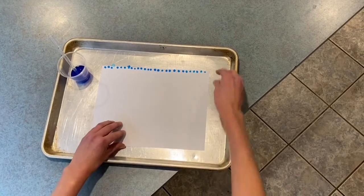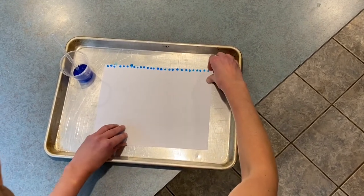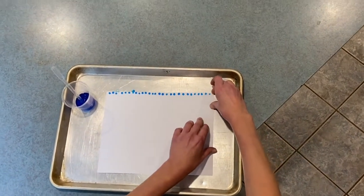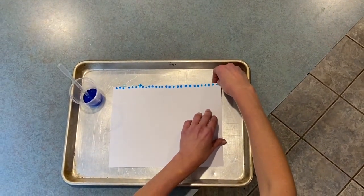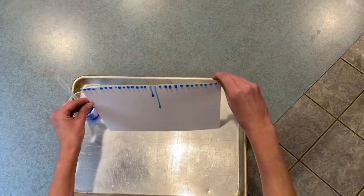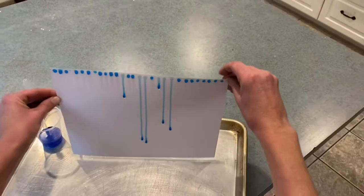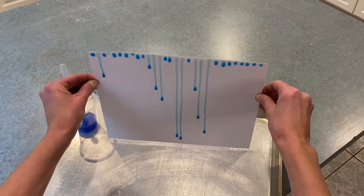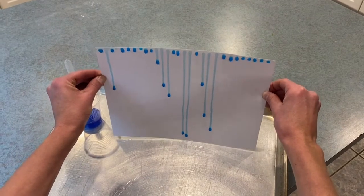We're going to carefully lift it up and you can have a grownup help you with this part. And you're going to stand it up on the cookie sheet. And watch as the drops go down. And you might need to tap it a little and give it some help. But all those drops are going to rain down to the bottom.